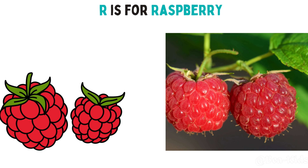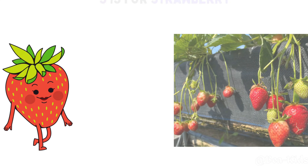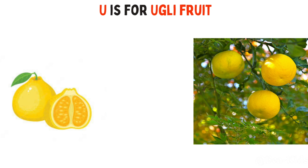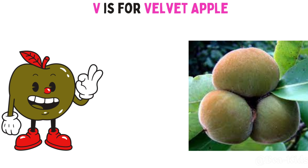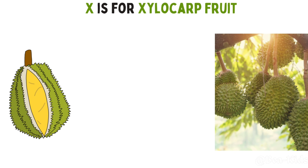R is for Raspberry. S is for Strawberry. T is for Tangelo Fruit. U is for Ugly Fruit. V is for Velvet Apple. W is for Watermelon. X is for Xylokarp Fruit.